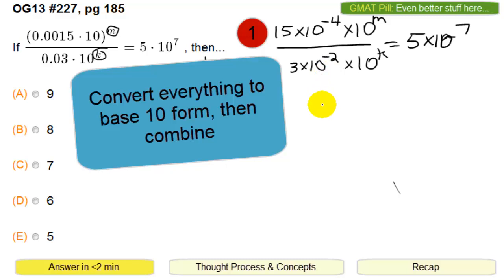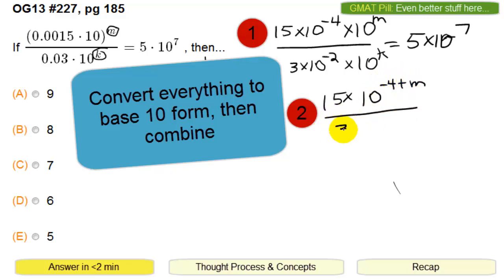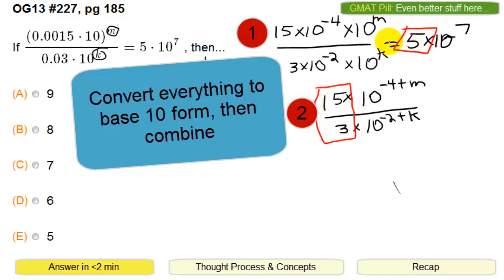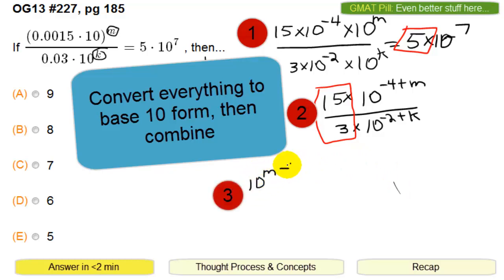So you combine the 10s and you have 15 times 10 to the minus 4 plus m power on top, and on the bottom you have 3 times 10 to the minus 2 plus k power. You notice that 15 over 3 cancels out with the 5 on the right — they're both equal to 5. So the remaining parts would be 10 to the m minus 4 divided by 10 to the k minus 2 equals 10 to the 7th.